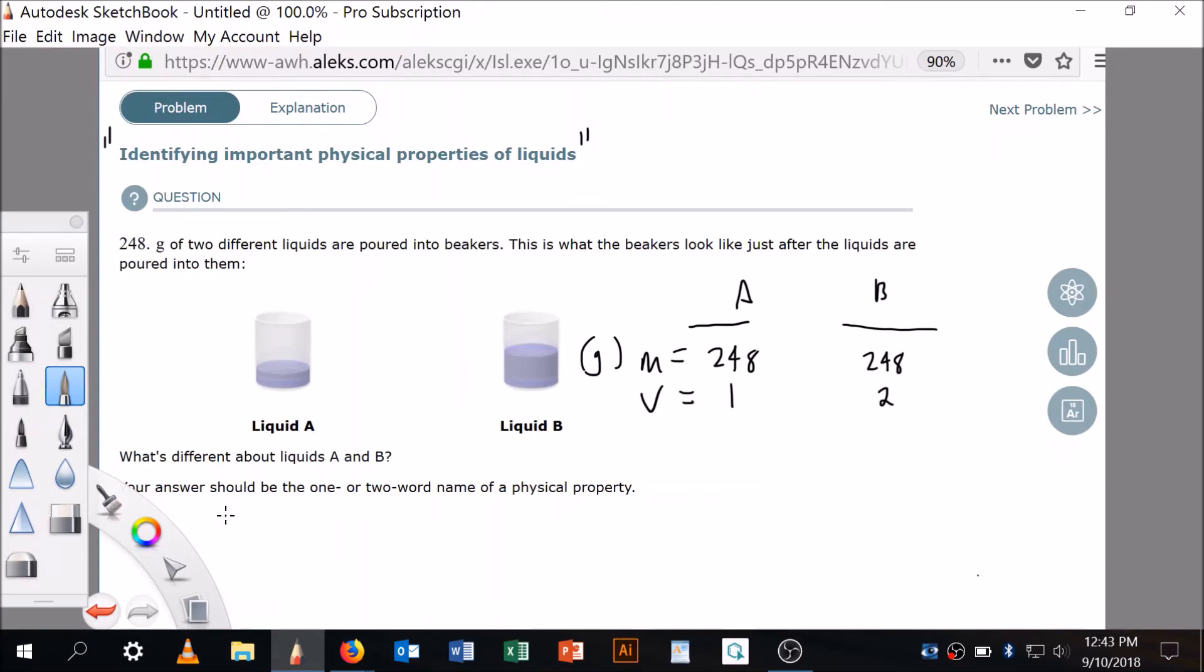Now, what's different about liquids A and B? Well, your answer should be a one or two word name of a physical property. So we could say volume is different, but that's not a physical property, right? That's an extensive property.